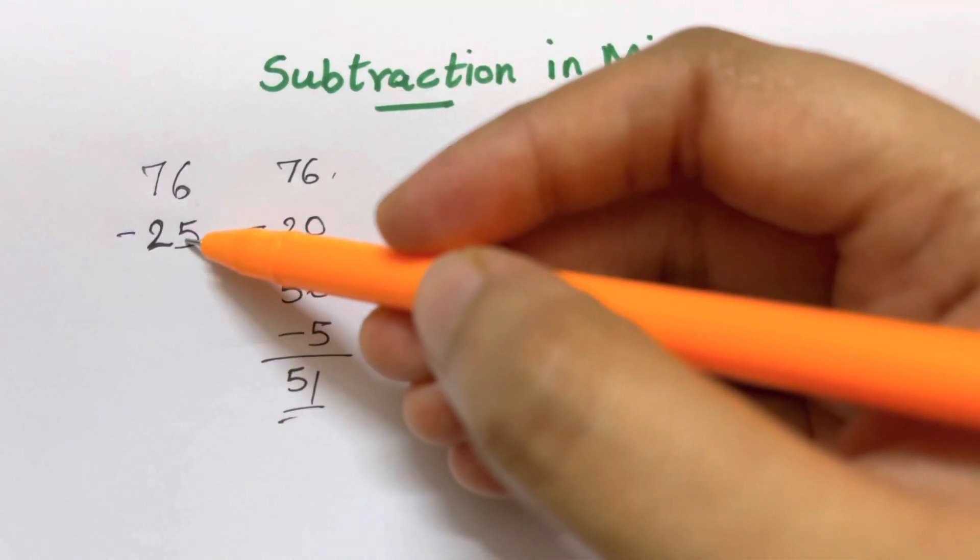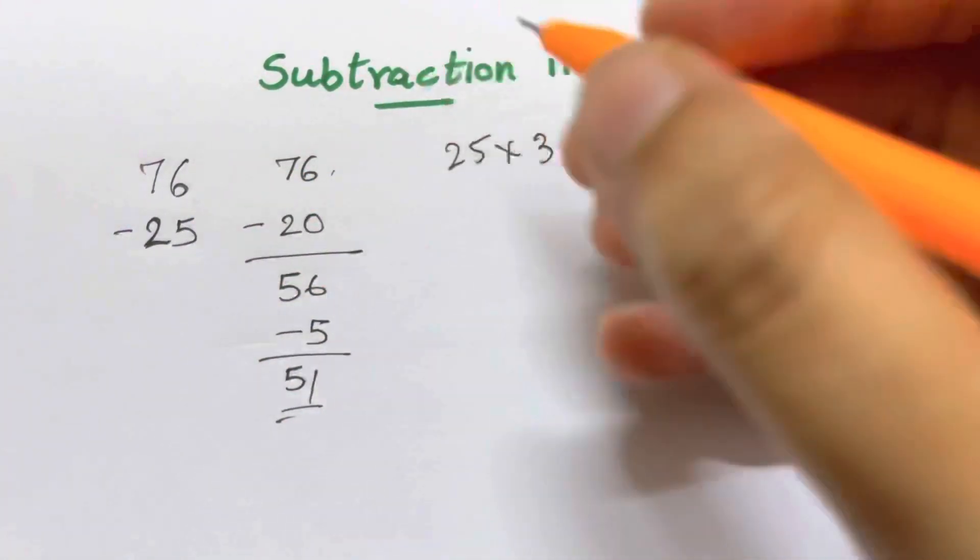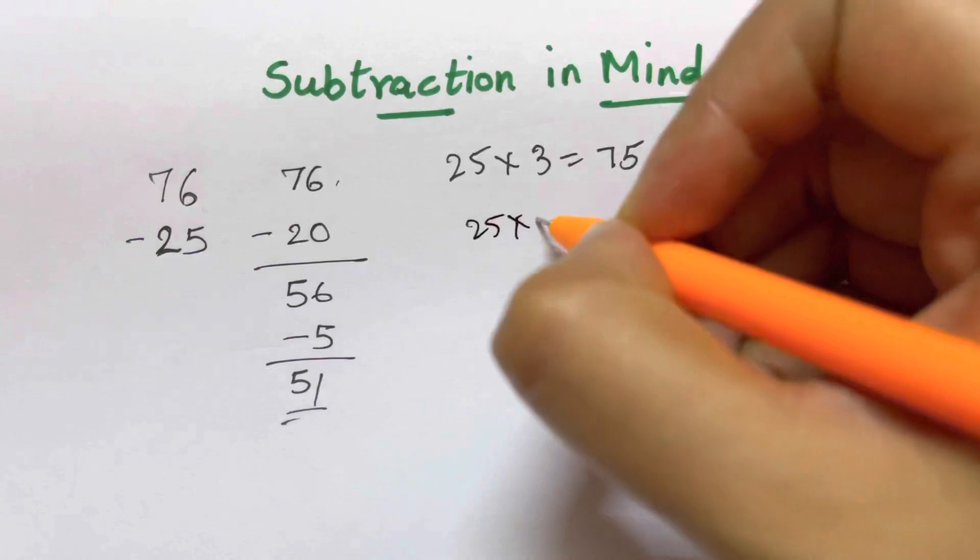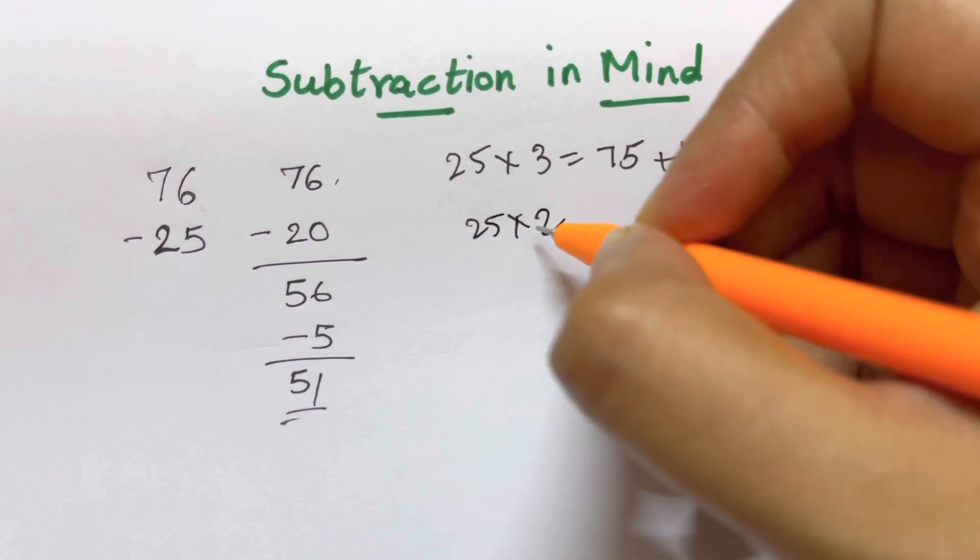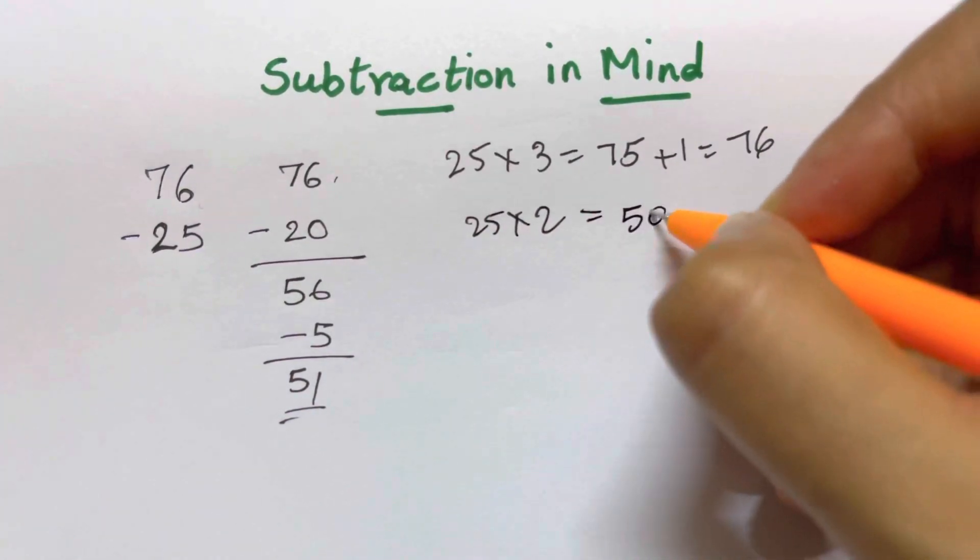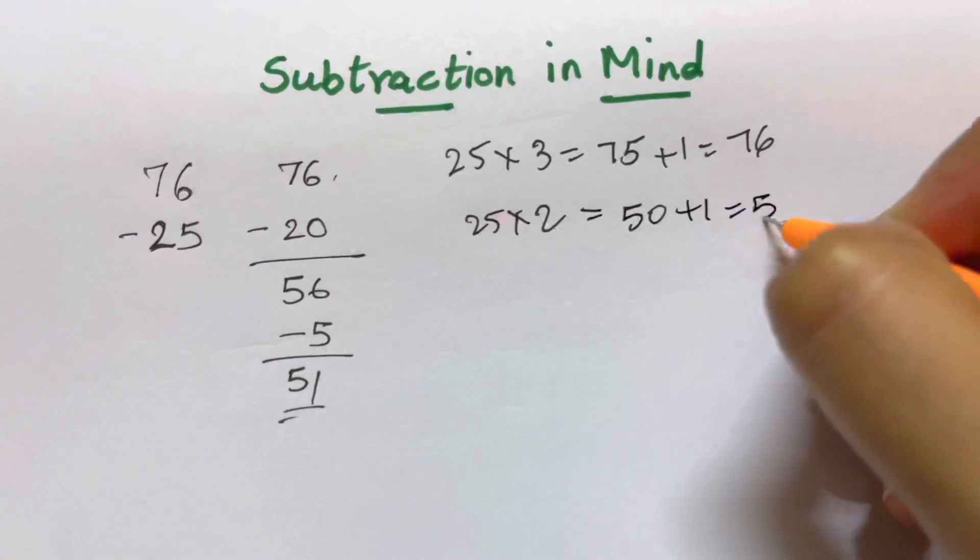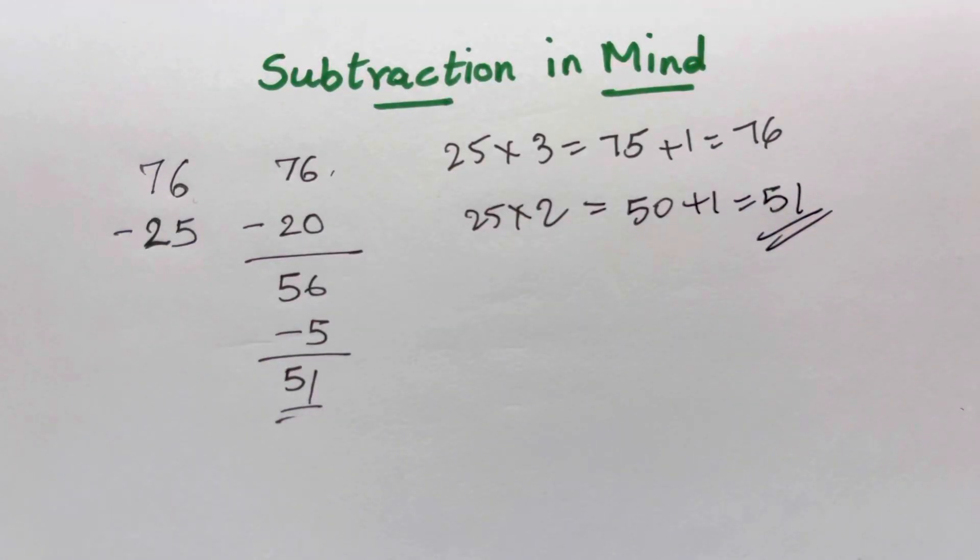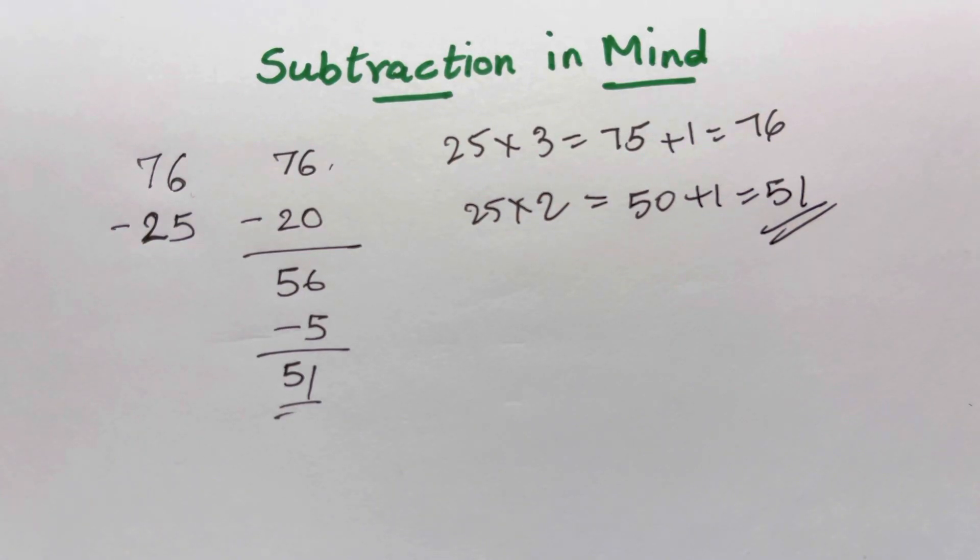Now you need to reduce 125 from 75. So 25 times 2 I'll do. I'm reducing 125, so that will give me 50. And there's 1 added to that. 50 plus 1, that's 51. This is how you can do it in mind. Now let me give you another example.